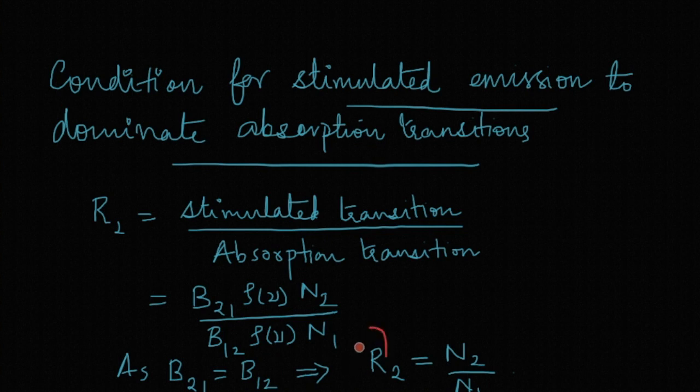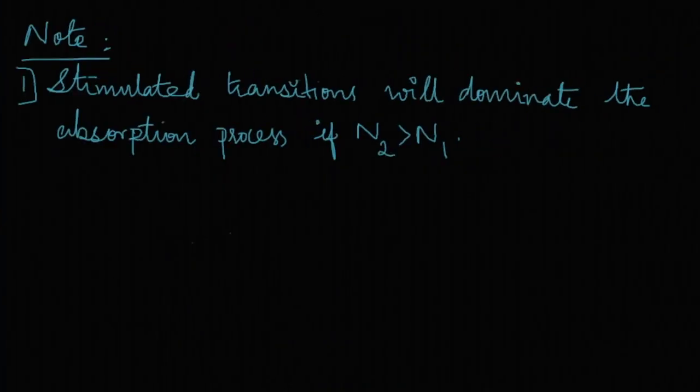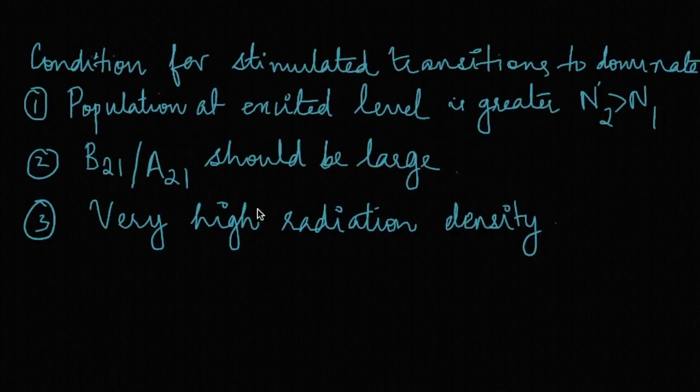So R2 can be written as N2 by N1. We have the condition that stimulated transition will dominate the absorption process only if N2 is greater than N1. To sum up, let us see the three conditions that are necessary for stimulated transitions to dominate over other two transitions. One is that the population at the excited level should be greater - that is N2 must be greater than N1. Remember this will be the inverse condition of the normal distribution.